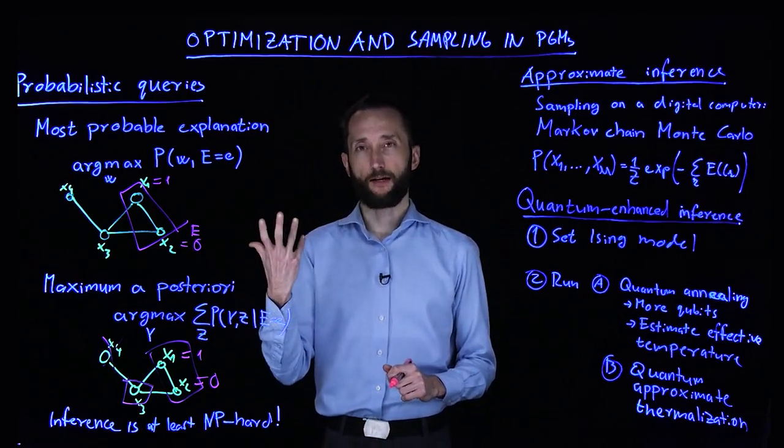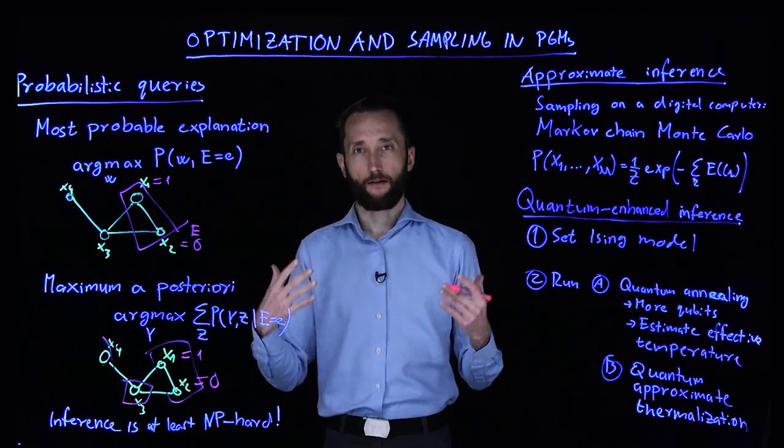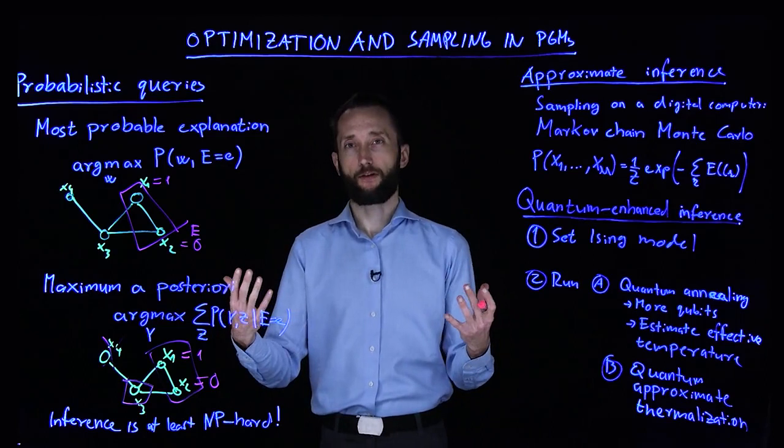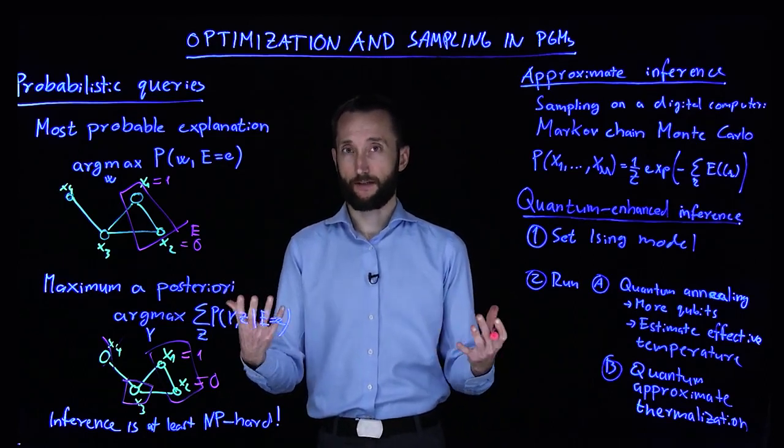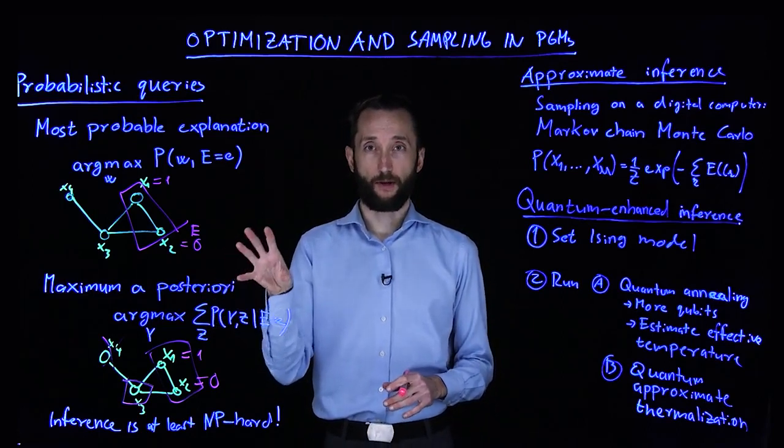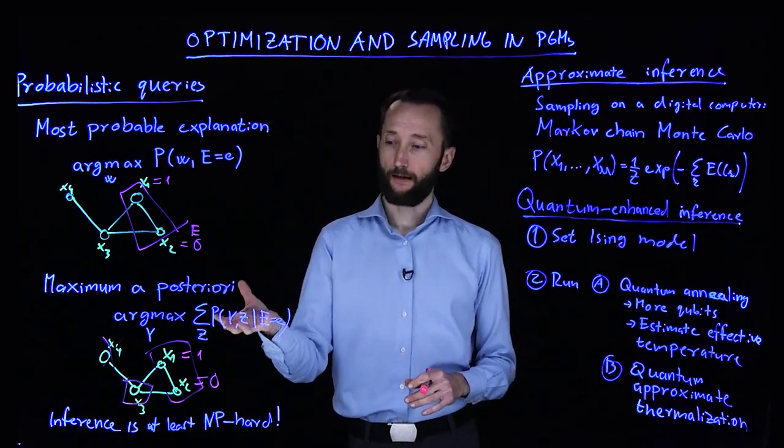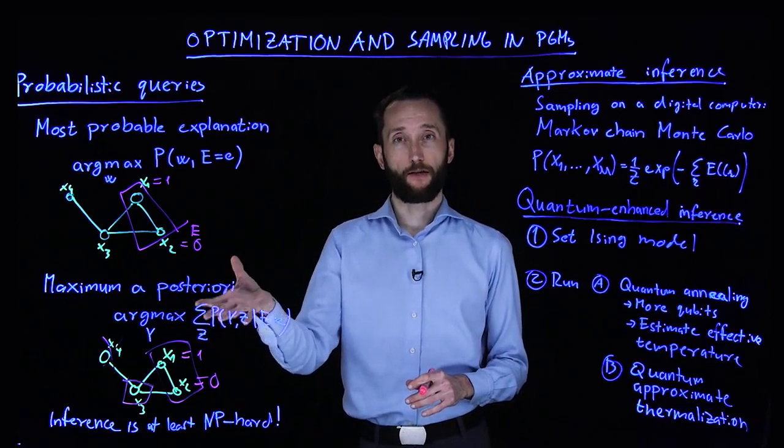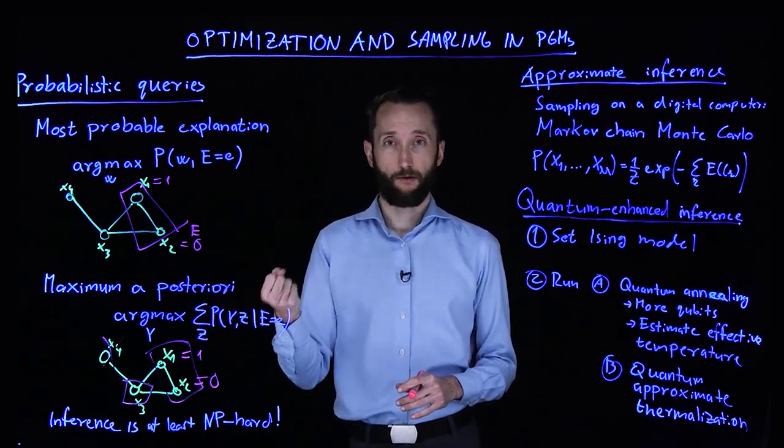And when you think about deep learning, once you train the network, running an inference step is relatively inexpensive. You can run it on a cell phone in many cases. Whereas here, even inference using the model remains hard. So if we can gain some advantage by using quantum resources, that's extremely valuable.